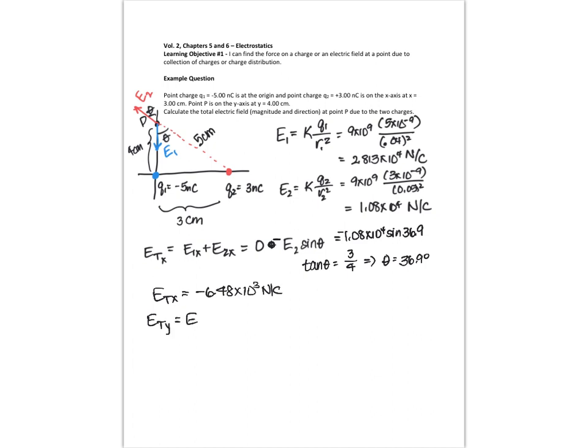So that's the total x component of my resulting vector. Now I'm going to do the y component of my total vector, which is E1y plus E2y. E1 is in the negative y direction, so this is just minus 2.813 times 10 to the 4, and then the y component of E2 is going to be E2 times the cosine of 36.9.